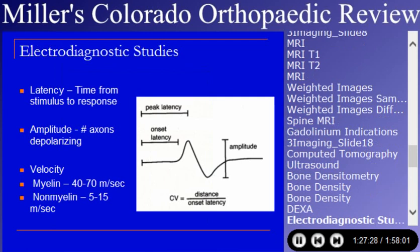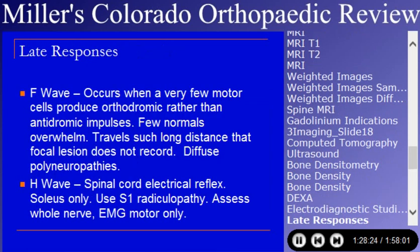Electrodiagnostic studies were talked about a little in the hand lecture, and this will be slightly repetitive. There are several things looked at: latency is the time from stimulus to onset of response; amplitude is the height of the response, reflective of the number of axons responding; and velocity is measured. Myelinated nerve fibers generally have velocities of 40 to 70 meters per second; non-myelinated nerve fibers are much slower, with velocities of only 5 to 10 meters per second. This part of the test is used for compression neuropathies.